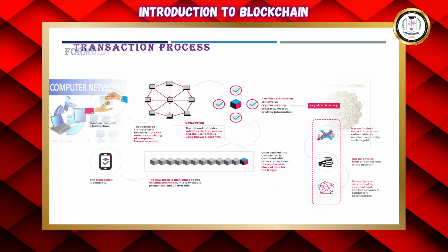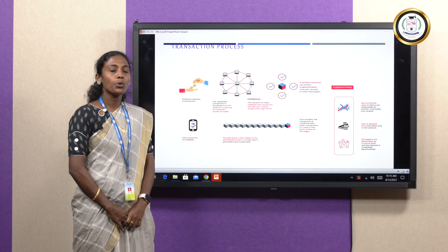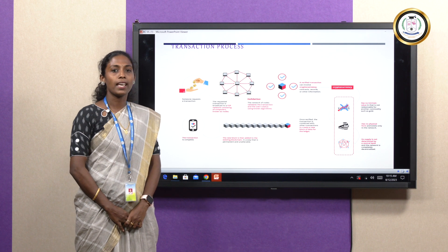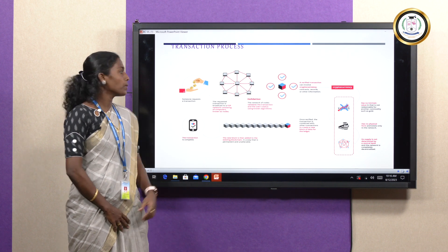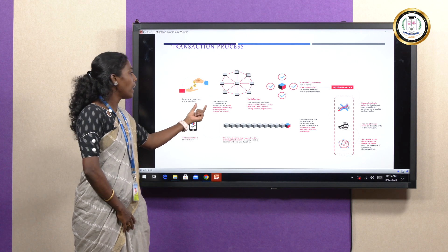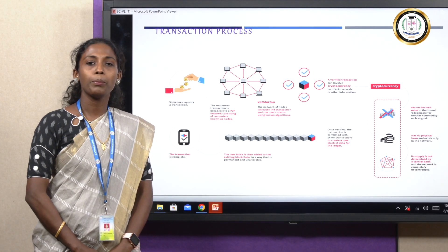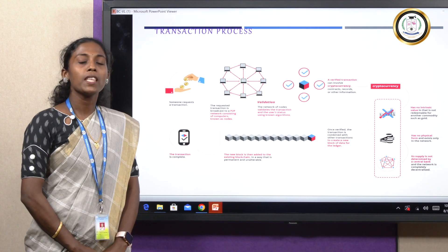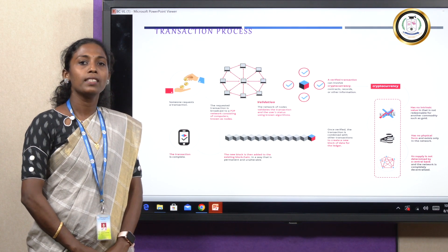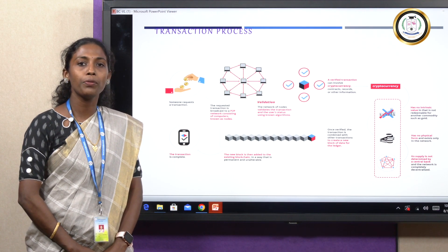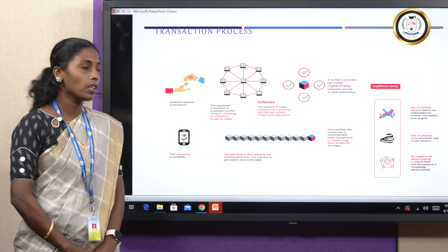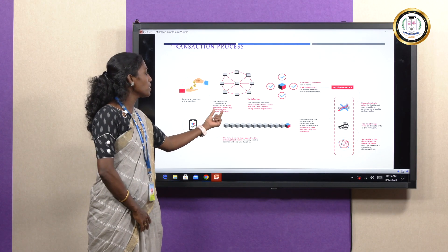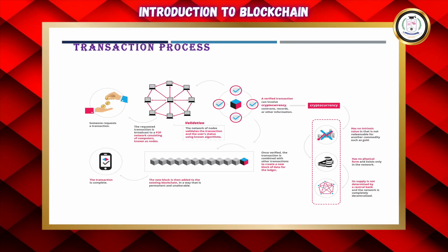Let us see how a transaction takes place in Blockchain. First, a transaction is requested between two parties. This transaction must be shared to all the nodes in the network. Blockchain works as a peer-to-peer network, and the requested transaction is broadcast to the P2P network, so all the nodes will have the transaction details.